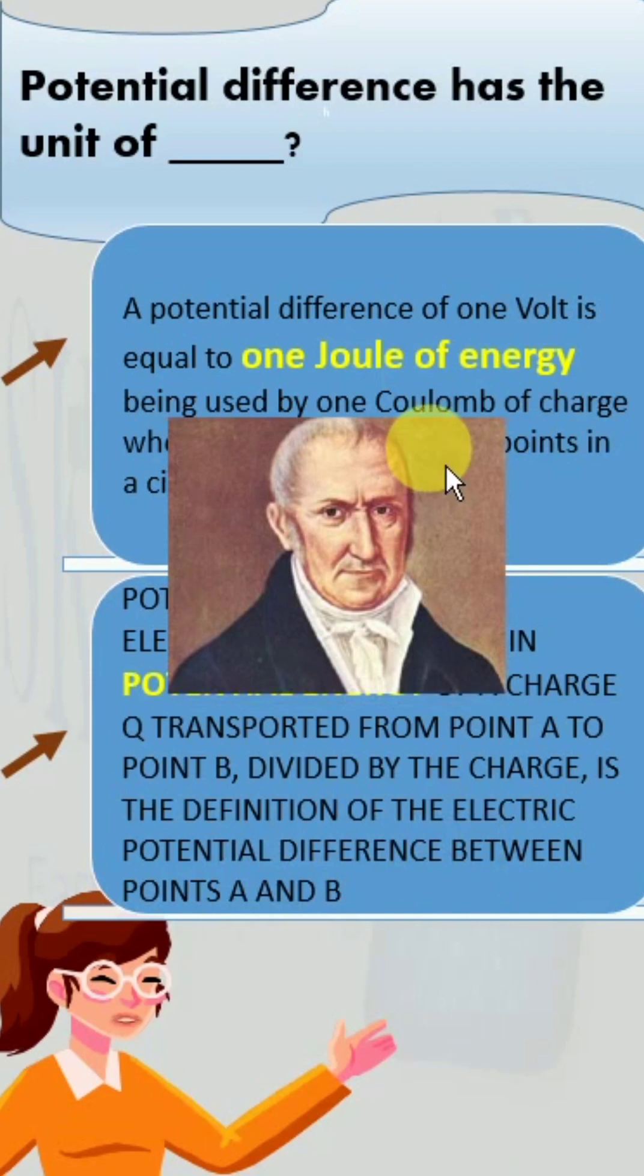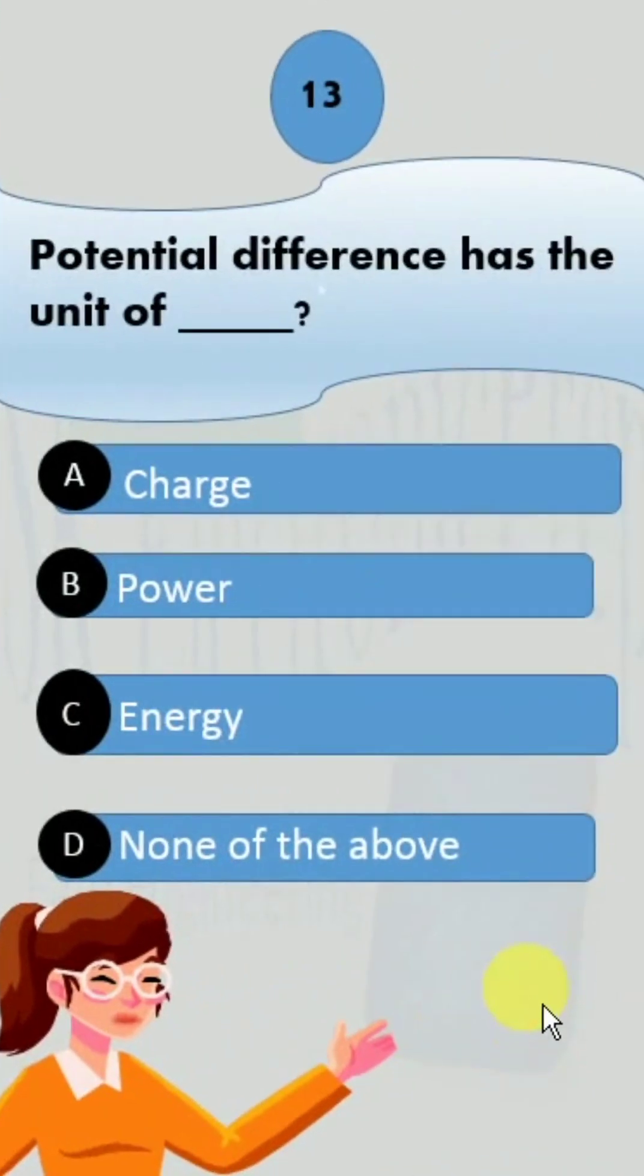One volt is equal to one joule of energy being used by one coulomb of charge. Volt is given by the scientist named Alessandro Volta who discovered it. With the help of our two definitions and mathematical equation, we have proved how energy is related to voltage difference. Therefore the correct answer is option C: Energy.